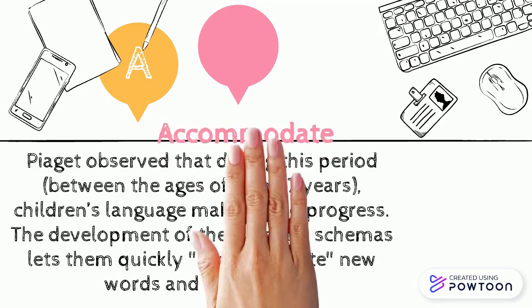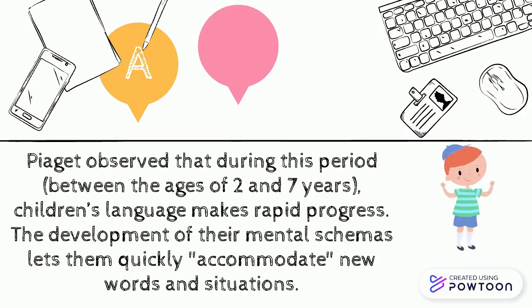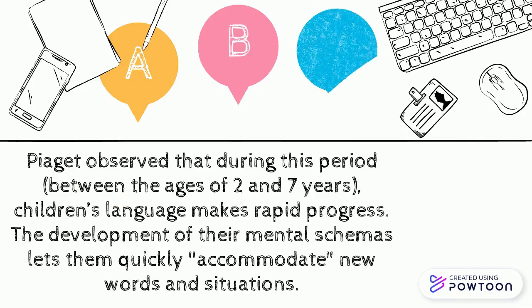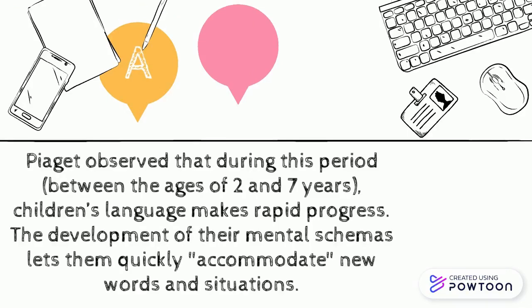Third, accommodation. Piaget observed that between the ages of two and seven years, children's language makes rapid progress. The development of their mental schemas lets them quickly accommodate new words and situations.